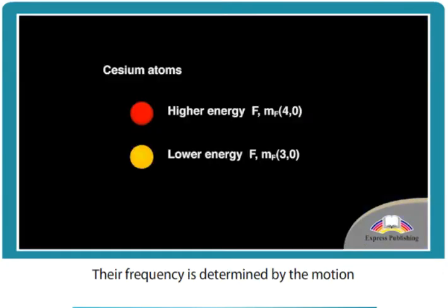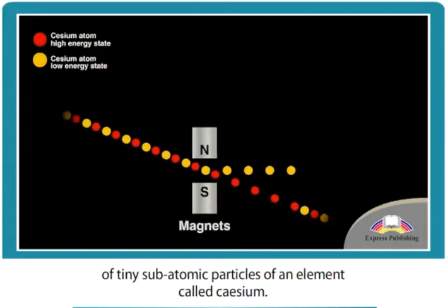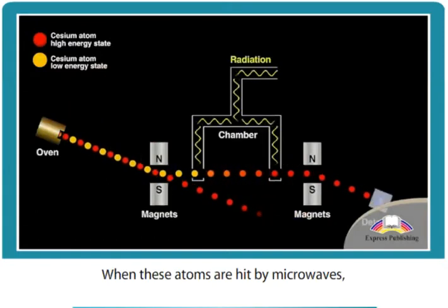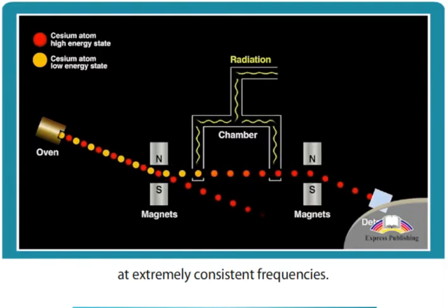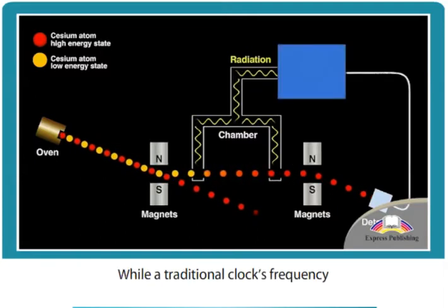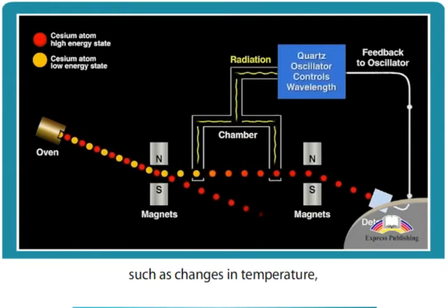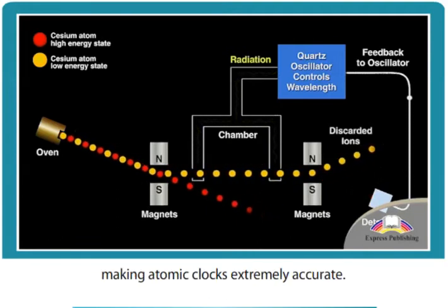Their frequency is determined by the motion of tiny subatomic particles of an element called cesium. When these atoms are hit by microwaves, their particles oscillate at extremely consistent frequencies. While a traditional clock's frequency can be altered by factors such as changes in temperature, a cesium atom always oscillates at the same frequency, making atomic clocks extremely accurate.